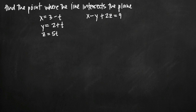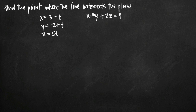Today we're going to be talking about how to find the point where a line intersects a plane. In this particular problem, we've been given the equation of a line in parametric form, and then an equation in the form x minus y plus 2z equals 9, which defines the plane. So we have the parametric equation of the line and the equation of the plane.